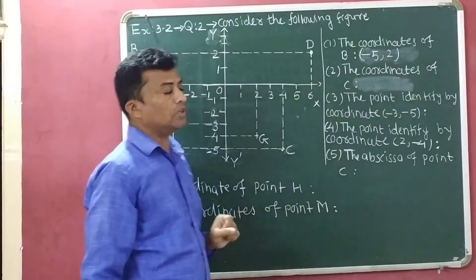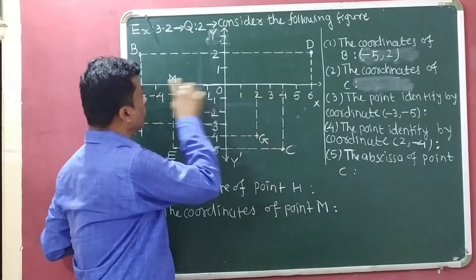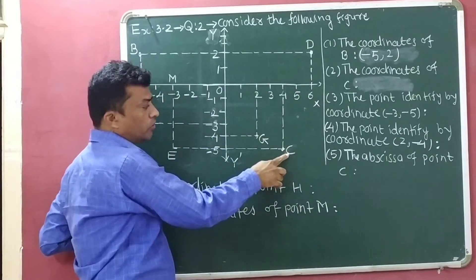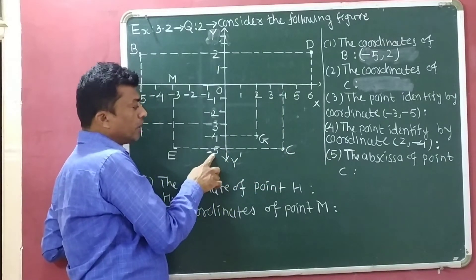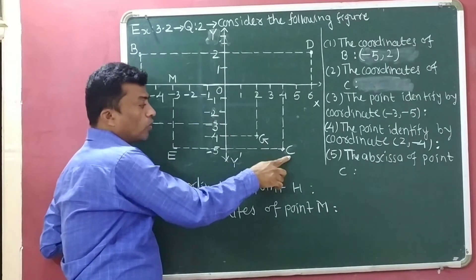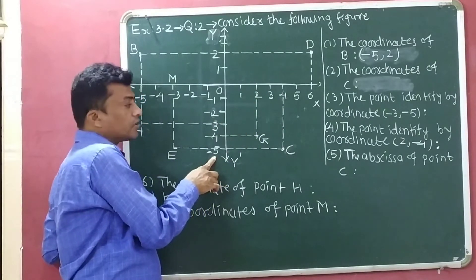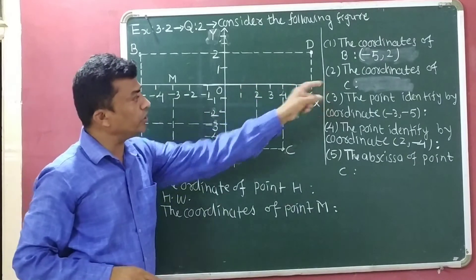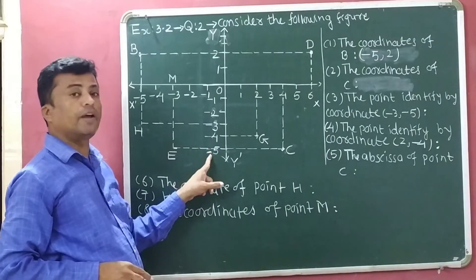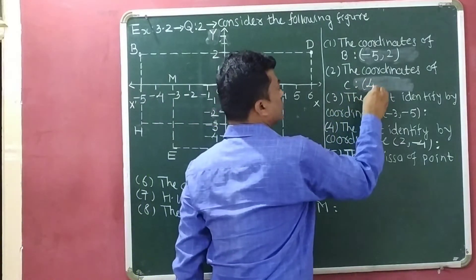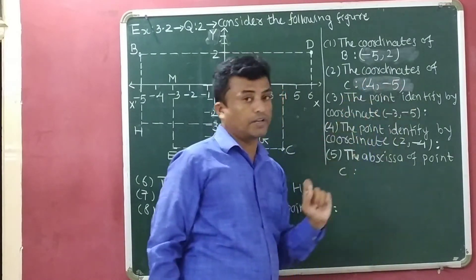Second, the coordinates of C. Point C is available here and this perpendicular touches at 4 on the x-axis, so the x-coordinate of point C is 4. This perpendicular touches at minus 5 on the y-axis, so the y-coordinate of point C is minus 5. The coordinates of point C are (4, minus 5).